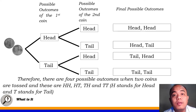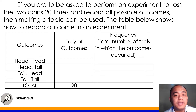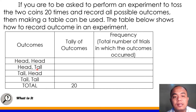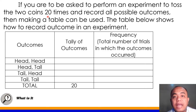Now, let's consider this activity. If you are asked to perform an experiment to toss two coins 20 times and record all possible outcomes, then making a table can be used. The table below shows how to record outcomes in an experiment. In this table, we have the four possible outcomes we identified earlier: head and head, head and tail, tail and head, and tail and tail. These are the sample space. Pwede nating gawin itong experiment — kung ano sa mga sample space ang lalabas during your experiment. Ang gagawin natin, 20 times na ito toss natin ang dalawang coins. After that, we will tally the outcome based sa experiment mo, and then we will have the frequency.